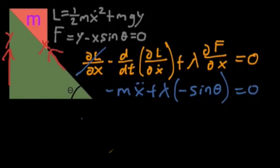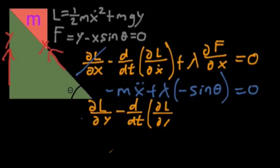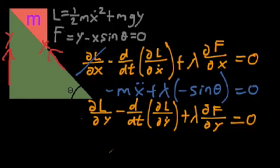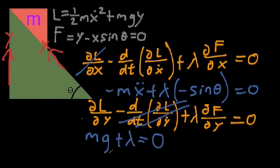And now we get to do that with y. So partial L partial y minus d/dt partial L partial y dot plus lambda. This is the same lambda. Partial f partial y is also equal to zero. And partial L partial y, we have something this time, that's equal to mg minus what? Minus nothing, because L does not depend on y dot at all. So this entire thing cancels out. So this is going to be plus lambda times partial f with respect to y. And that's one. And that equals zero. Which means that lambda equals minus mg.